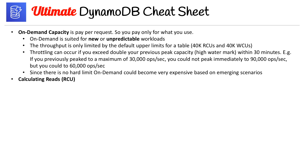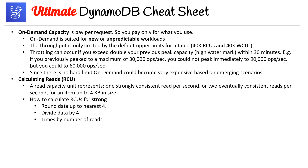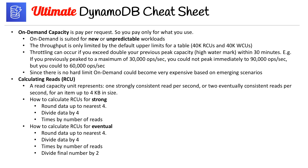Since there is no hard limit on on-demand, it could be very expensive in certain scenarios, so be careful. But you have the flexibility of not having to think about setting capacity, which is really nice. For calculating reads: a Read Capacity Unit represents one strongly consistent read per second, or two eventually consistent reads per second, for an item up to 4 kilobytes in size. To calculate RCUs for strong consistency: round data up to the nearest 4, divide by 4, then multiply by the number of reads.